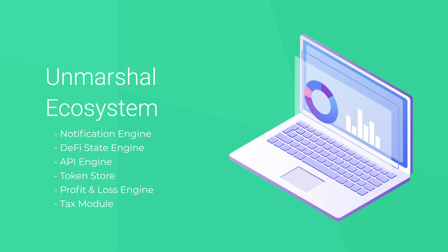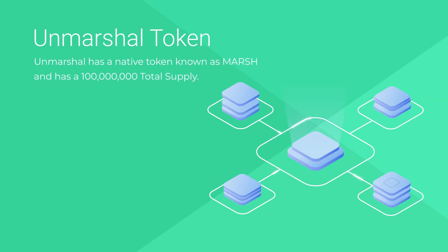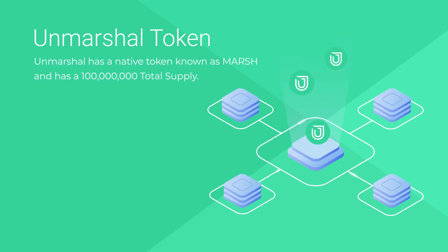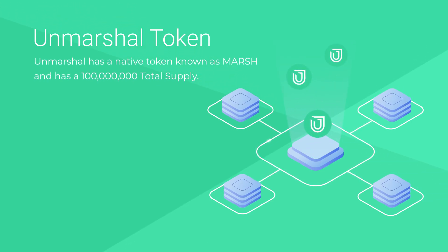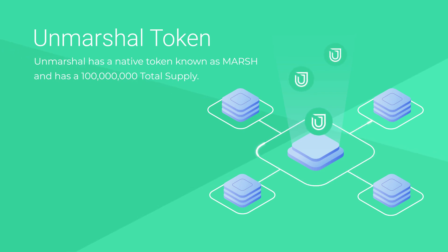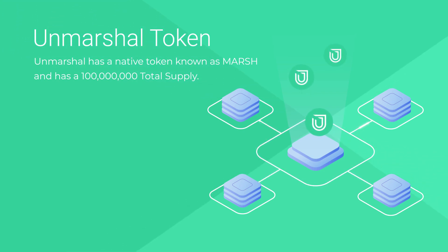Unmarshall is relentlessly working towards building the next phase of evolution in the decentralized financial landscape. Unmarshall has a native token known as MARSH, with a total supply of 100 million. MARSH is the utility token that powers Unmarshall's network and incentivizes network contributors such as node runners and indexers.